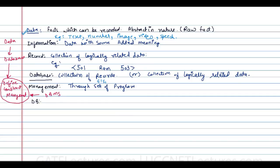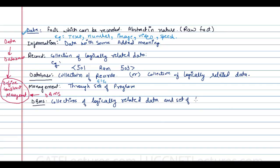A database management system can be defined as a collection of logically related data and a set of programs to access that data. That is called a database management system.